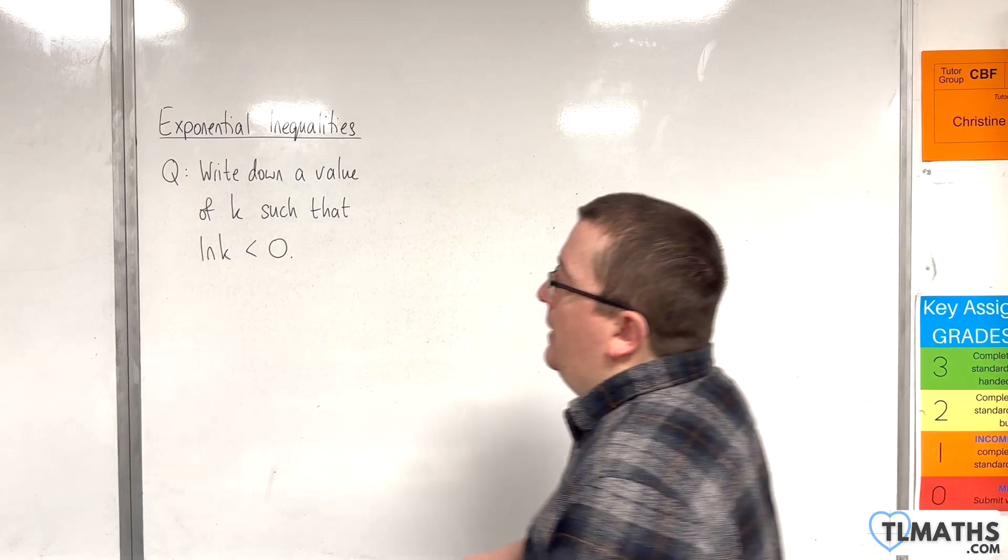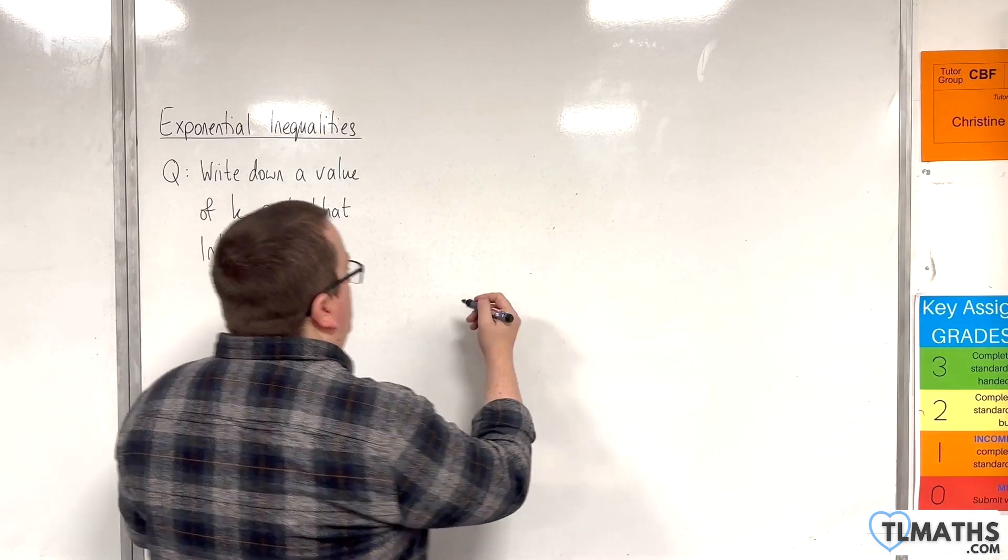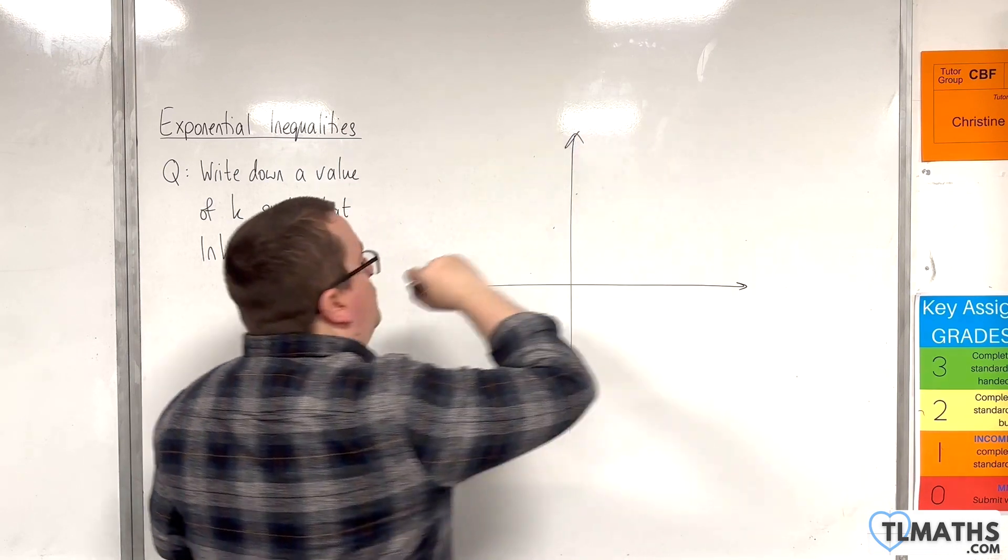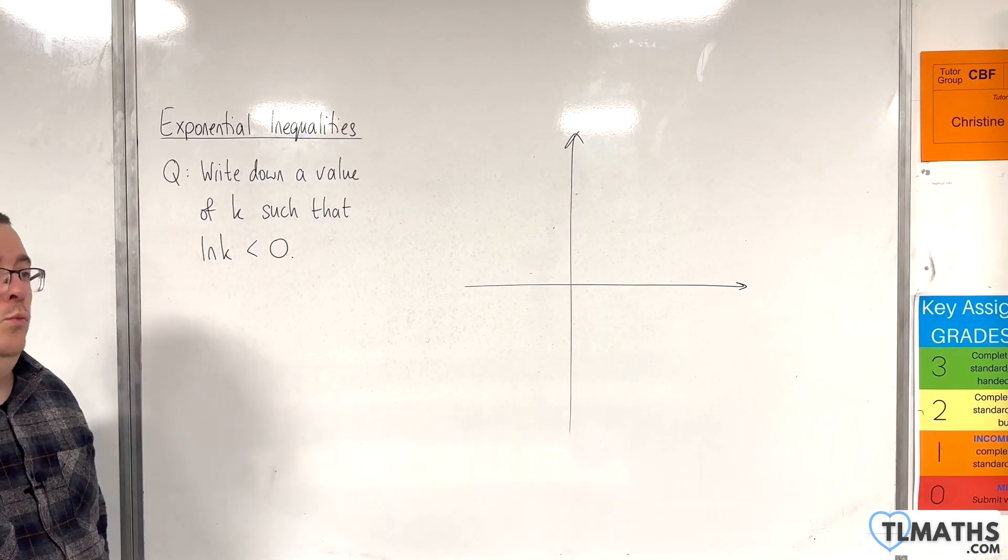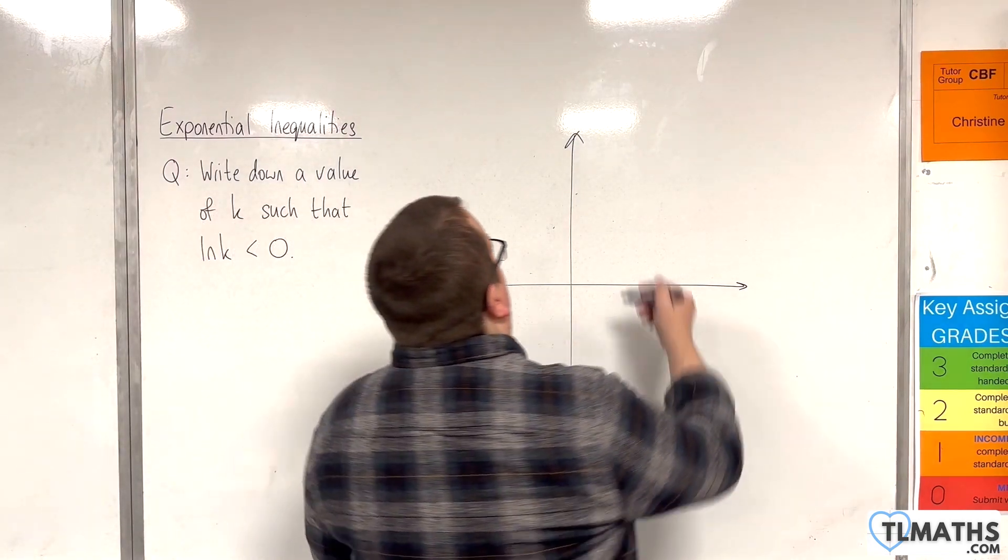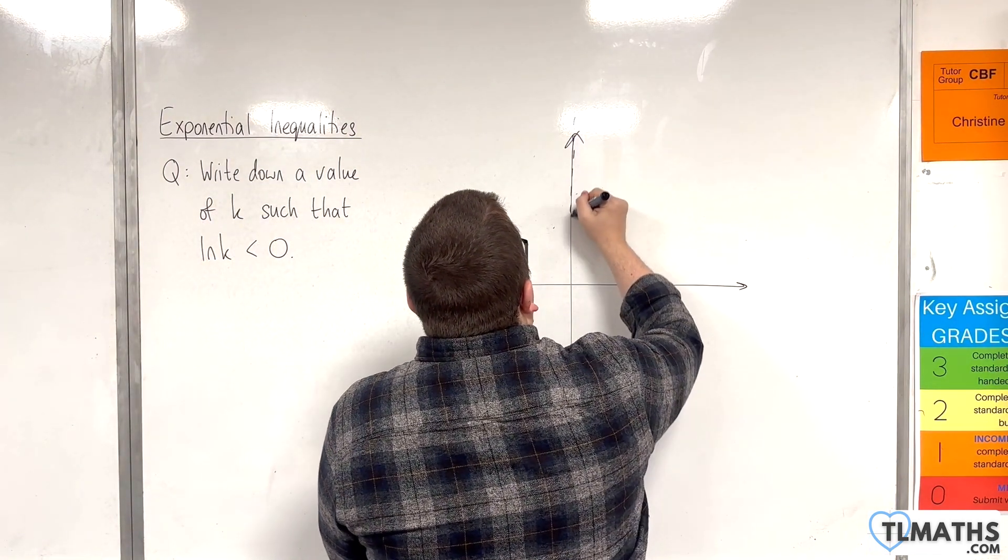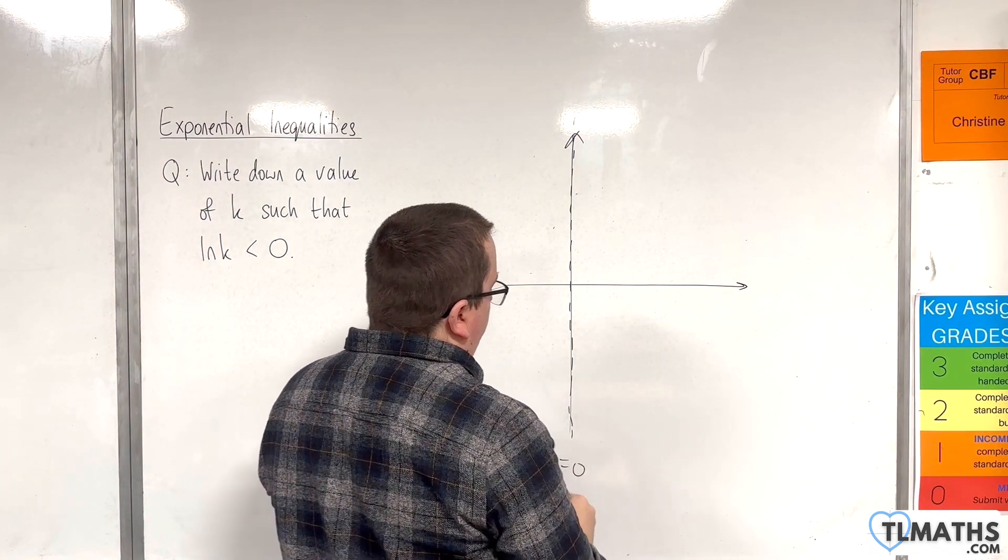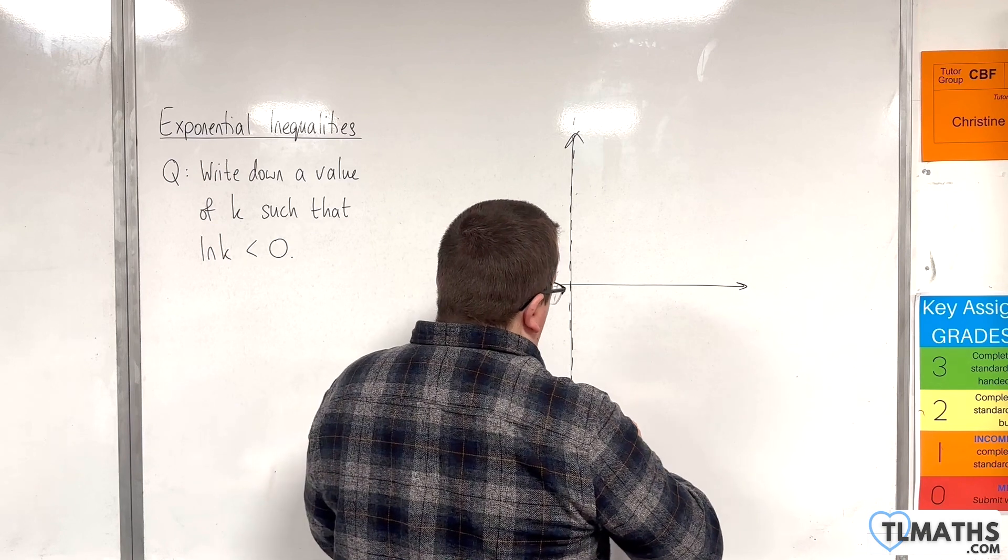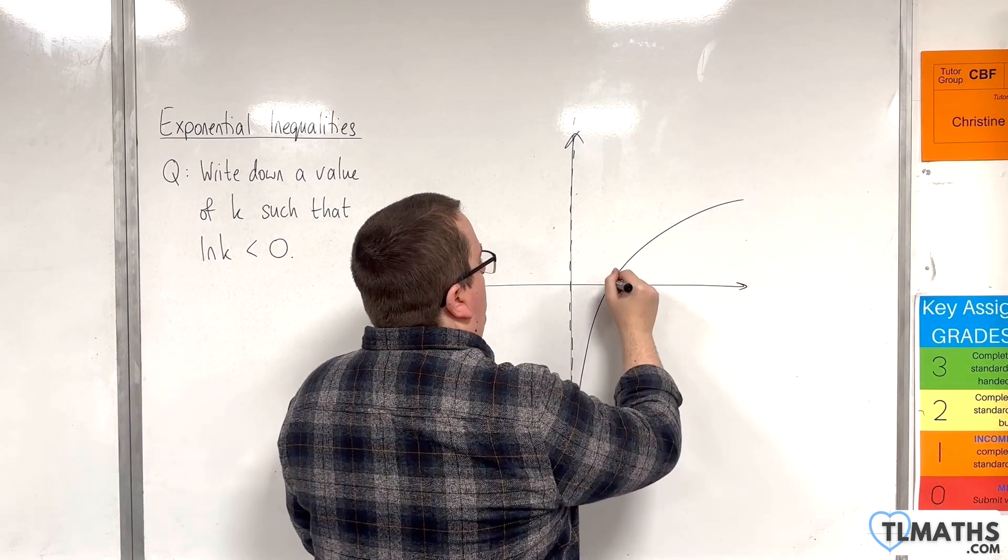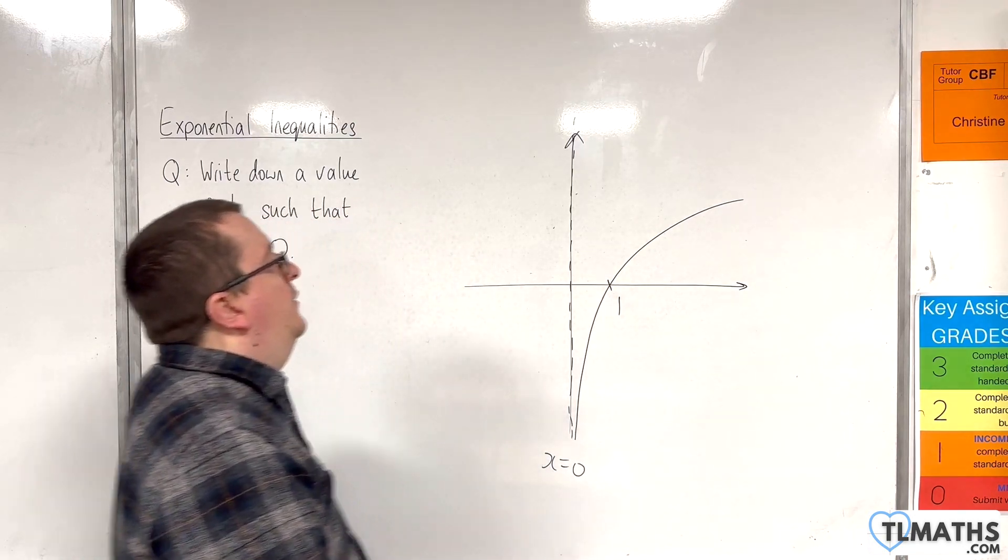Now, in order to understand this, you could just bung some values into a calculator and see what you get. But to really understand this, we need to go back to what the natural log of x looks like. So, it has a vertical asymptote at x equals 0. And the curve looks like this. This point being 1 on the x-axis.